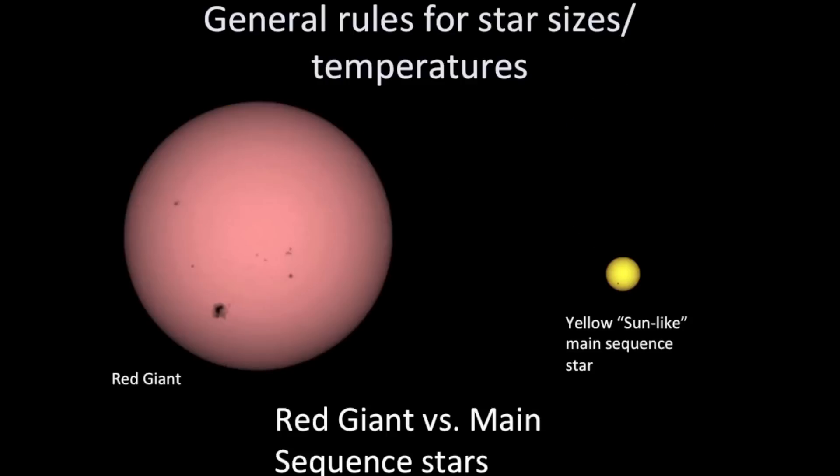If I'm going to compare a main sequence star to a red giant, the red giant will almost always be larger but lower in surface temperature.